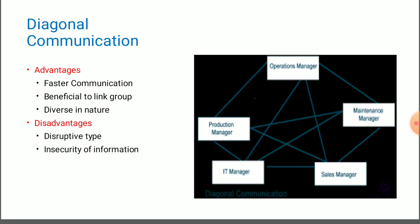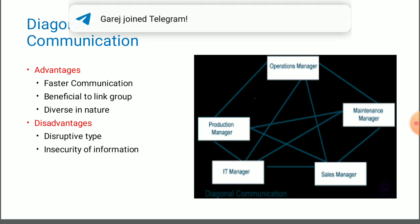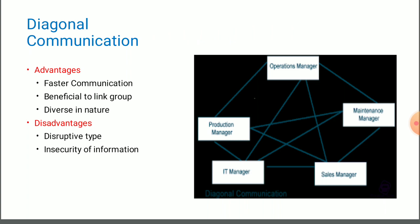What is the concept of diagonal communication? I am going to tell you by using this picture which is there in the right hand side of your slide. In this slide, there are different types of managers and they have their own status, they have their own place in the organization. For example, at the top there is an operation manager, then production manager, IT manager, sales manager, and maintenance manager.